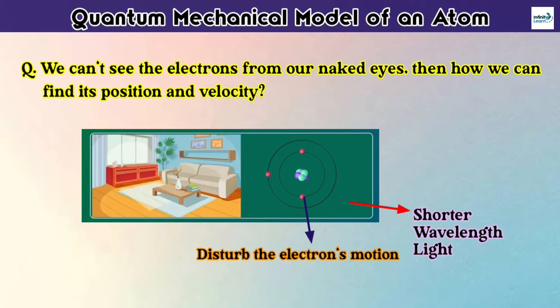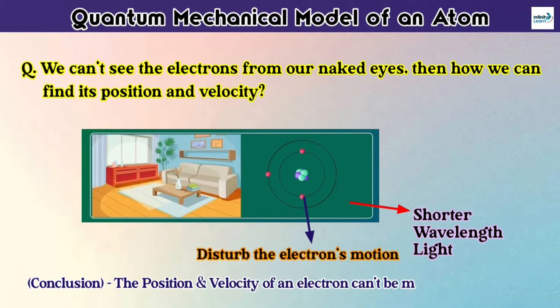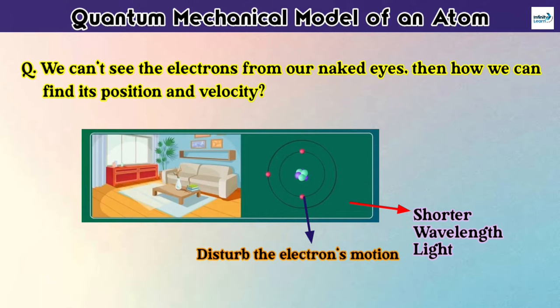And then we again return to the first conclusion that the position and velocity of an electron cannot be measured accurately. But this can be done with the help of this quantum mechanical model of an atom.